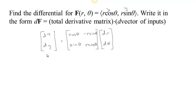So we have the change in outputs equals this 2-by-2 slope matrix — the total derivative — times the vector of changes in inputs. One way we could use this is if we're at a particular location r and theta, thinking about what happens if we change r or change theta: we put those values in and get an approximation for how much the outputs would change. We can use this differential to approximate the change in outputs from the change in inputs.